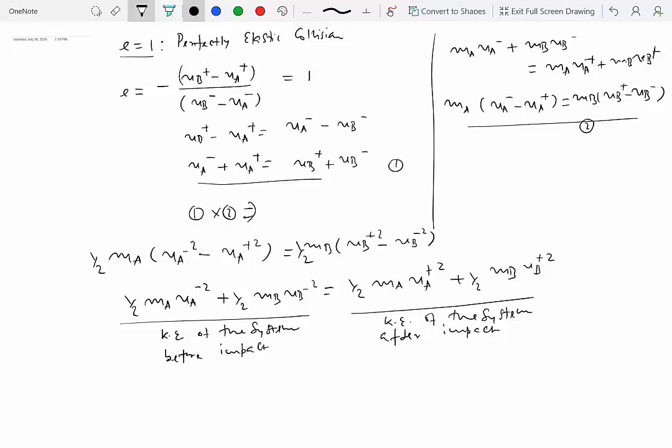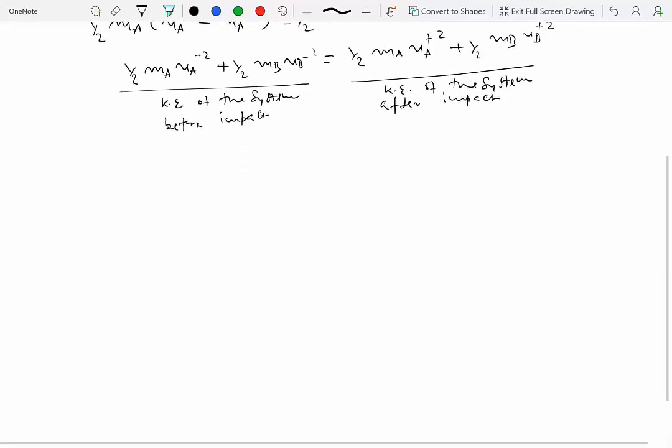If E is not equal to 1, if the question doesn't say it's a perfectly elastic collision, please do not use conservation of mechanical energy. It's a very common mistake where students equate the energies before and after impact without paying attention to what kind of collision it is. If E is not equal to 1, for inelastic collisions where E is between 0 and 1, there is a percentage loss.